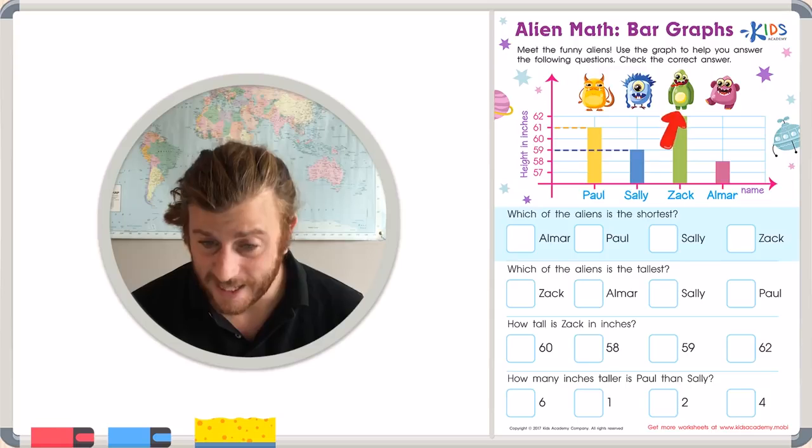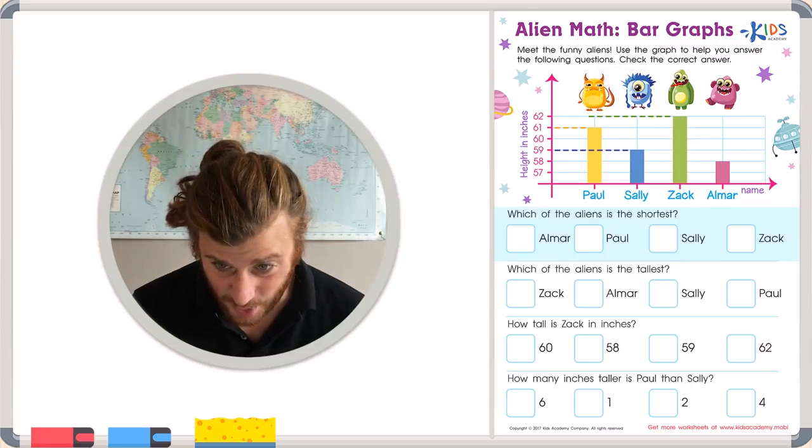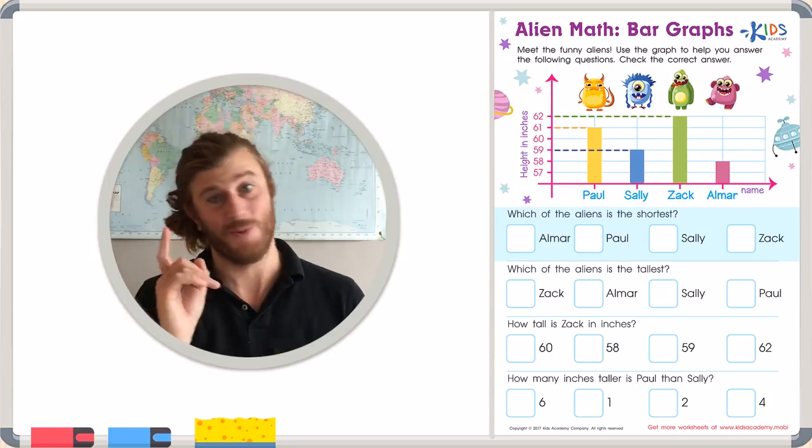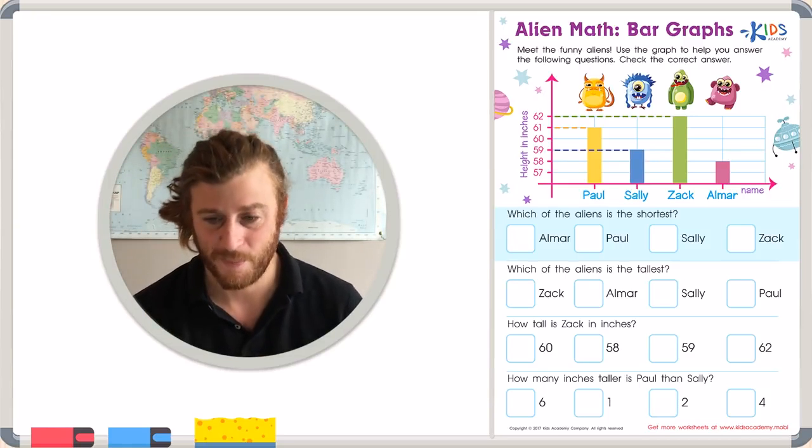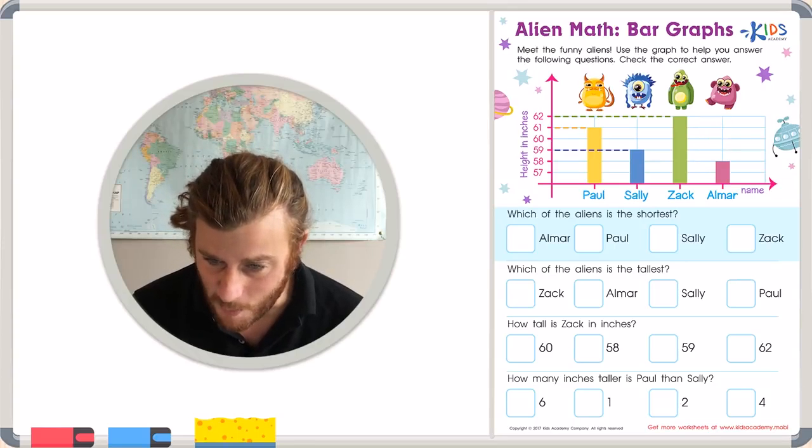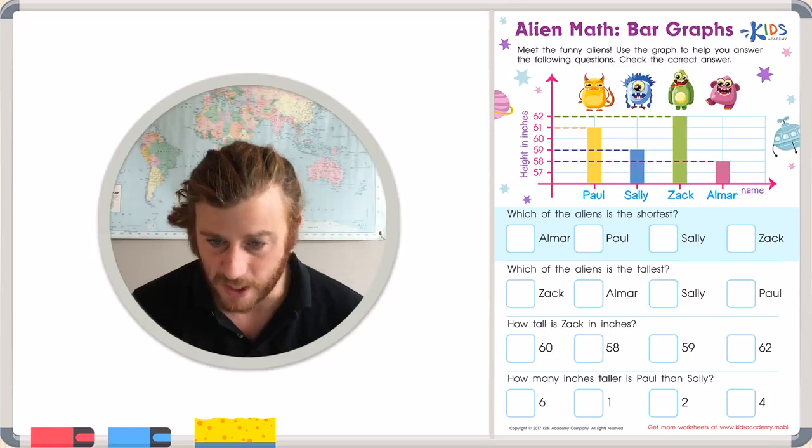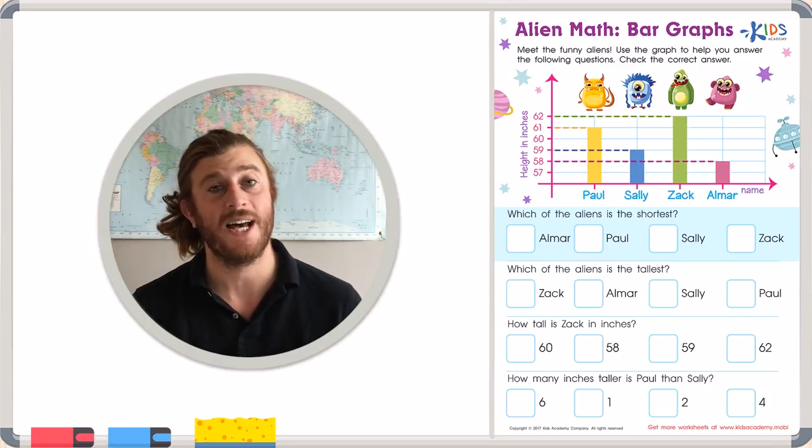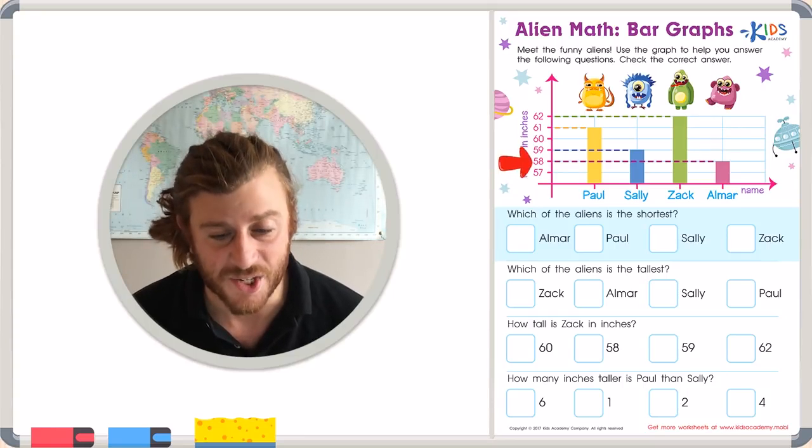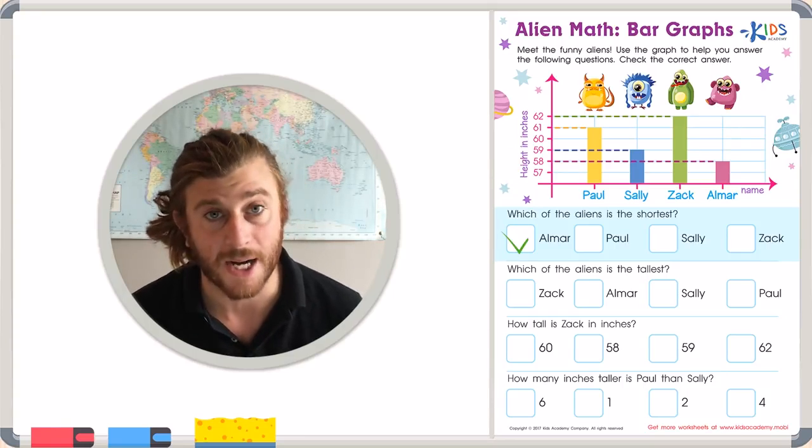Our third alien, Zach, is a whopping 62 inches tall. So far he is the tallest, which means he is not the shortest. And finally we have our pink alien, Omar. And Omar is only 58 inches tall. And just by looking at the graph you can easily tell that Omar is our shortest alien at 58 inches. Let's check the box for Omar.